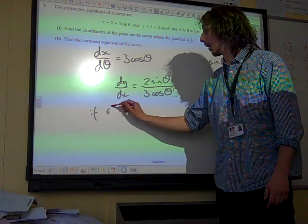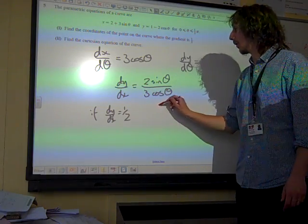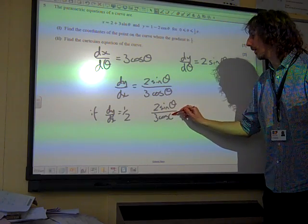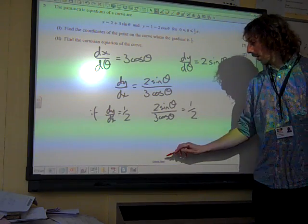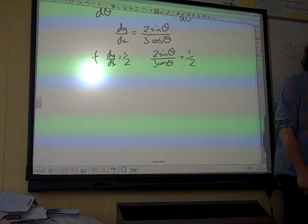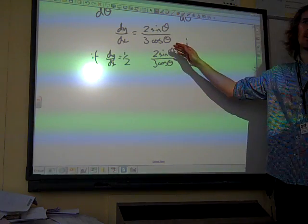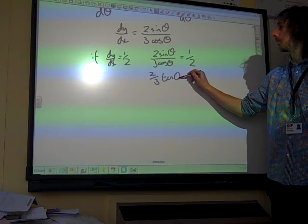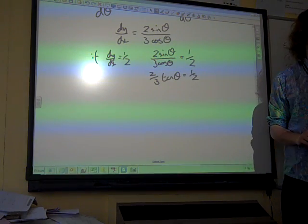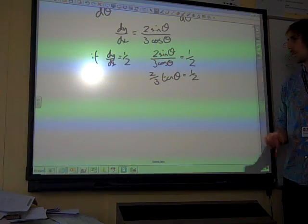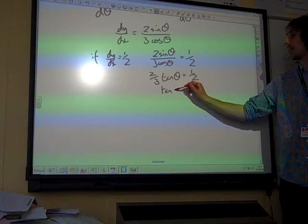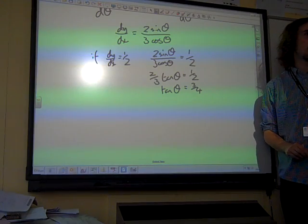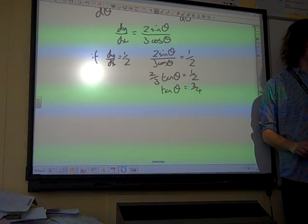If dy/dx equals a half, we've got two sine theta over three cos theta is equal to a half. Actually, the easiest way of doing this now is remembering the sine theta divided by cos theta is tan theta. We really want to have it in terms of just one identity, one function. And if we rearrange this now, we've got tan theta is, that would be three quarters, wouldn't it? So tan theta is three quarters.